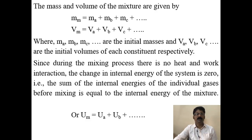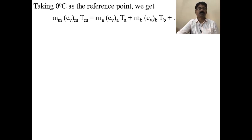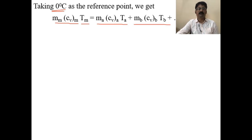The internal energy of the mixture Um equals the sum of internal energies before mixing: Um = Ua + Ub + ... Taking zero degrees as a reference point, we write: Mm · cvm · Tm = mA · cvA · TA + mB · cvB · TB. That is, mass times specific heat times temperature for the mixture equals the sum of those quantities for each individual gas.